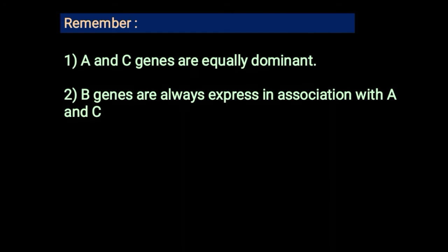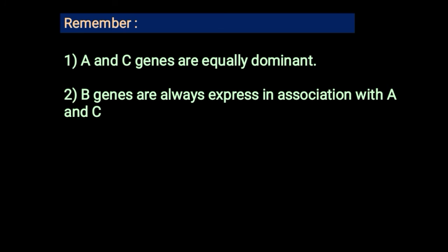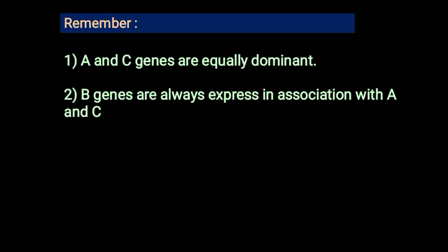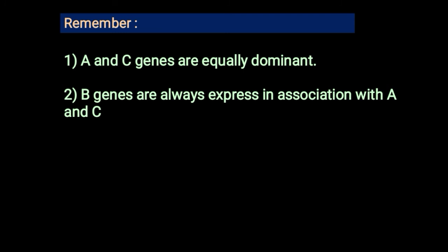There are two main points for understanding the ABC model. Point one: A and C genes are equally dominant, and one becomes more active in the absence of the other. For example, the A gene becomes more active in the absence of C gene, and vice versa. Point two: the B gene is always expressed in association with both the A gene and the C gene.